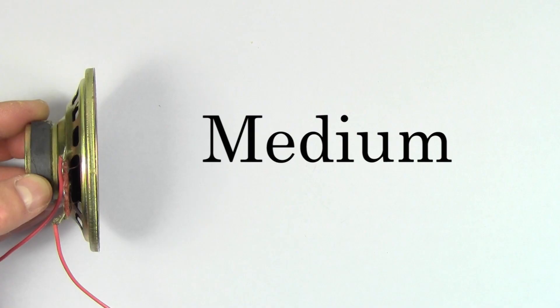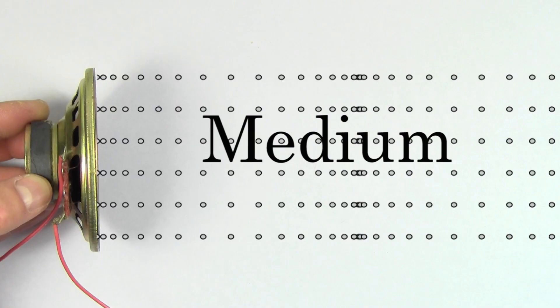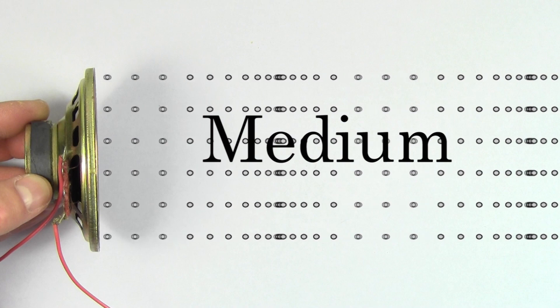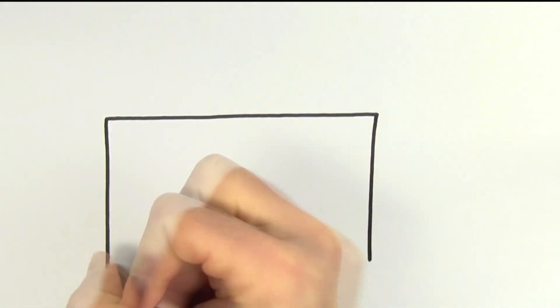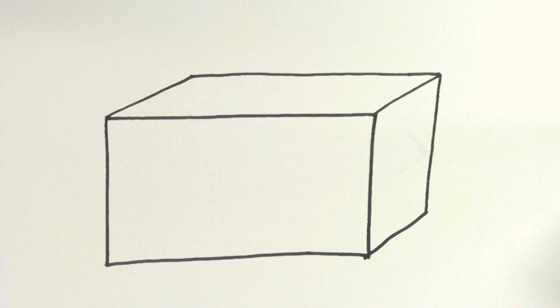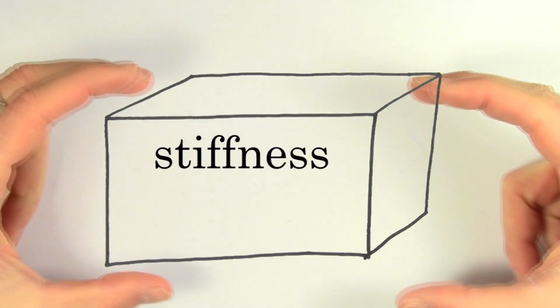To change the speed of sound, you have to change the properties of the medium that that sound wave is traveling through. And there's two main factors about a medium that will determine the speed of the sound wave through that medium.